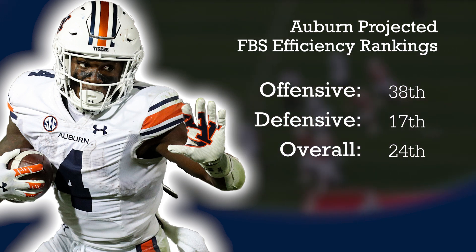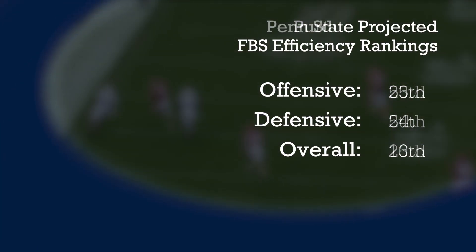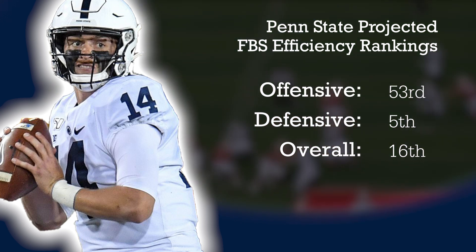Athlon has Auburn picked to finish last in the SEC West — Penn State should be able to beat the last-place team in the SEC West. Purdue is probably better than people expect — I have them ranked 23rd to Penn State's 16th — but they've lost a lot of offensive weapons and starters on defense, so maybe they're a little overrated. Penn State, with tons of offensive weapons and a strong offensive line, is probably a little underrated offensively. We'll learn a lot in that first game about the trajectory we expect for Penn State and the Big Ten West.